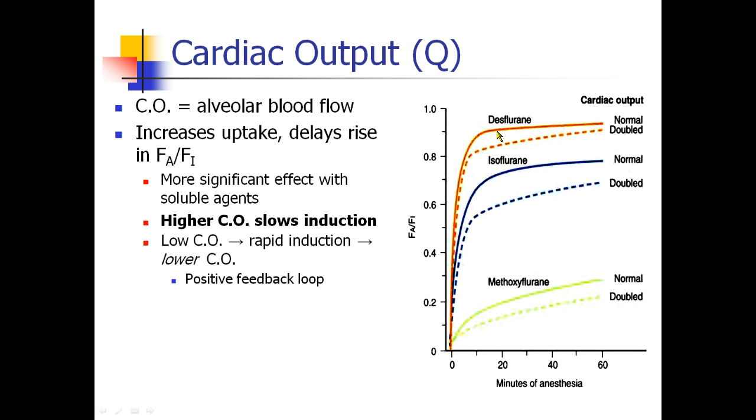So if you give a child halothane, which we used to do, at a very high concentration, and halothane, you could give several MAC of halothane, you had to remember to turn it off, or else you could cause cardiac arrest in children. Because the more you give, the more depressed their heart gets, which speeds up induction even more.